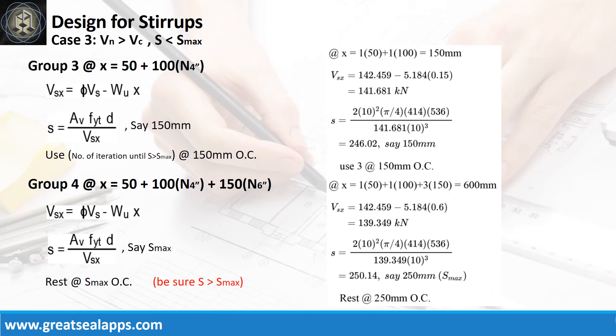For group 3, at x equals 150 mm, the web strength is 141.681 kN with spacing at 246.02 mm. Use 3 at 150 mm.